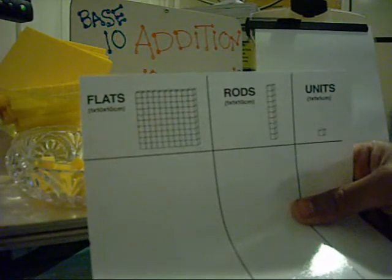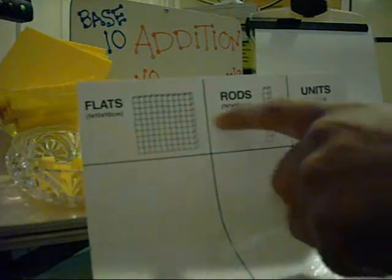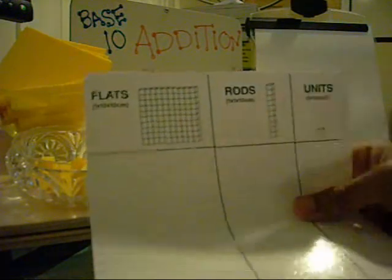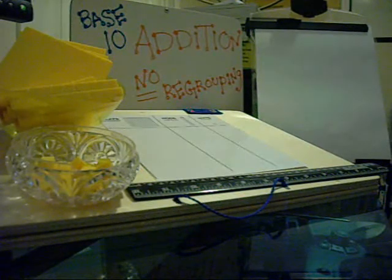Or you can just use construction paper, piece of paper, draw and write it out. And I have my units, my rods and my flats and the accompanying pictures. I also have a ruler and I have a blank piece of laminated paper which I'll be using to write some addition problems down. I also have a little dry erase marker.